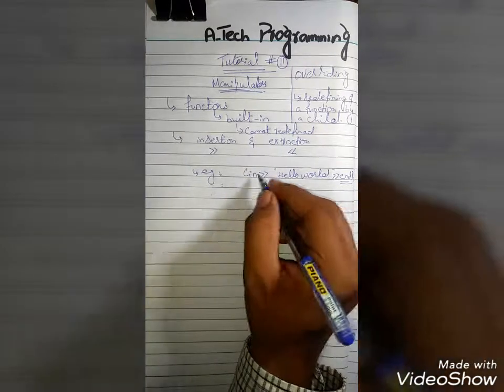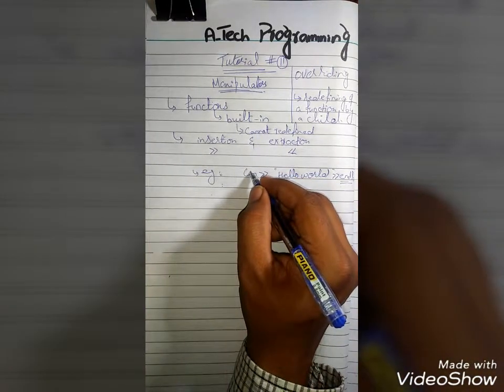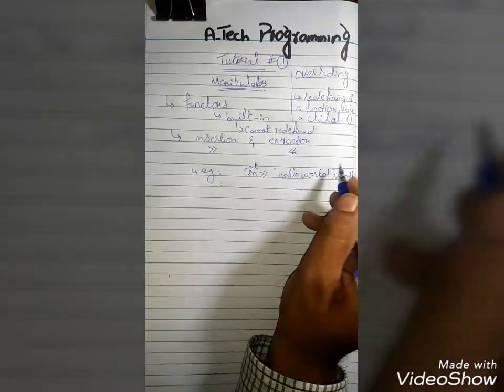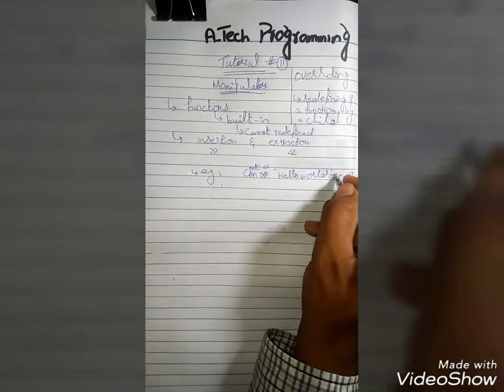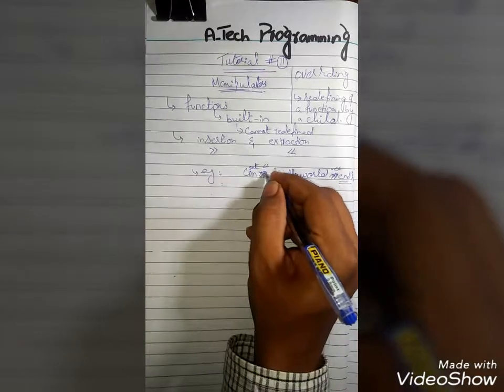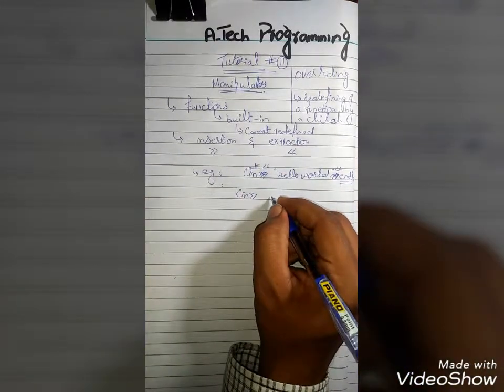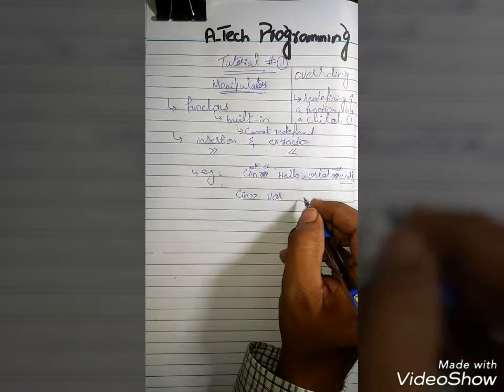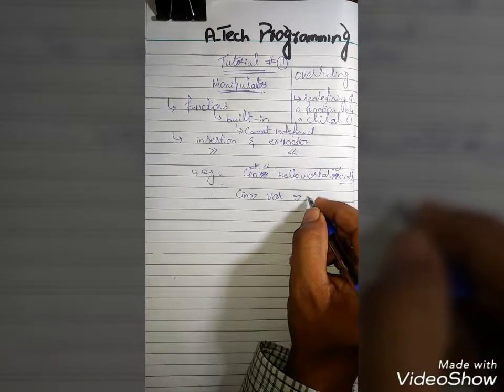Similarly, this will be cout. If we are using something, this will be the double extraction operator. If we are inserting something, a variable or anything, and then endl.